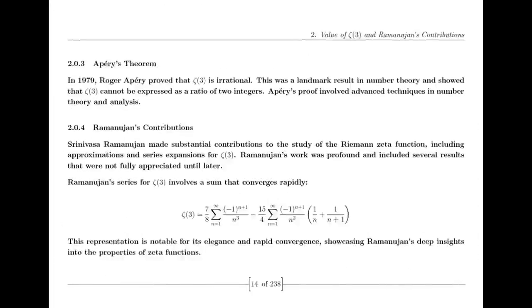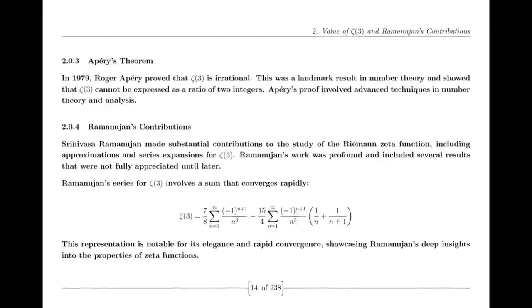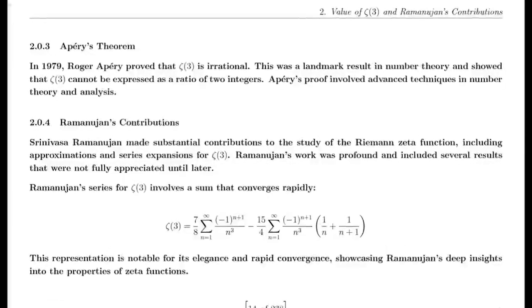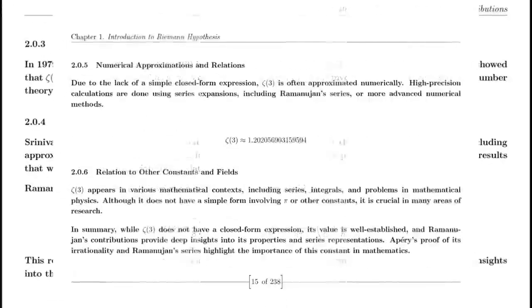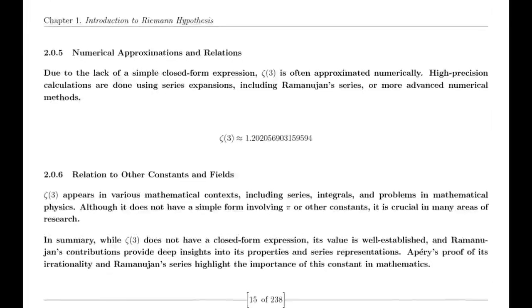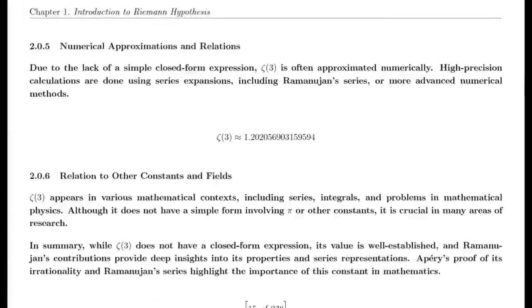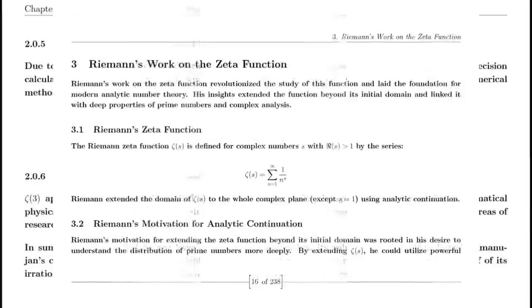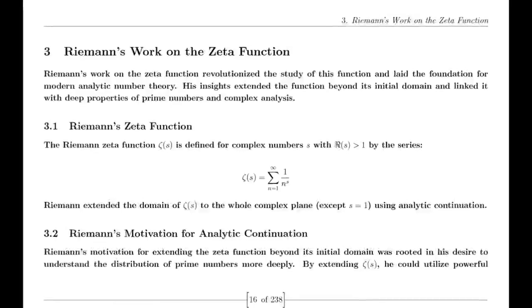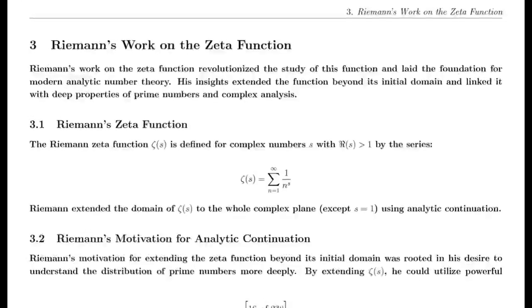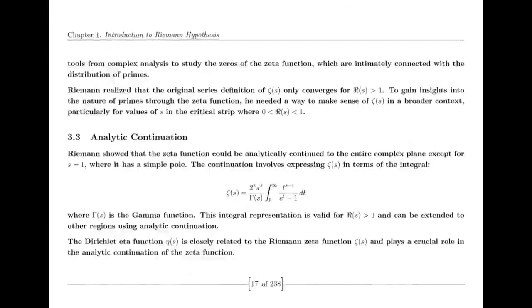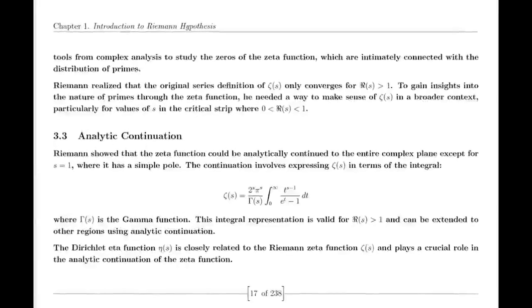Riemann's Hypothesis. Finally, we address the Riemann hypothesis itself. Riemann proposed that all non-trivial zeros of the zeta function lie on the critical line where the real part of s is one half. This hypothesis has profound implications for number theory, particularly in understanding the distribution of prime numbers. Despite extensive numerical evidence supporting the hypothesis, a formal proof or disproof remains one of the greatest challenges in mathematics.